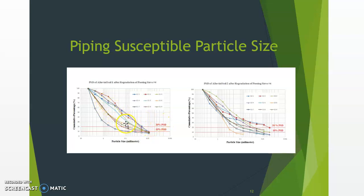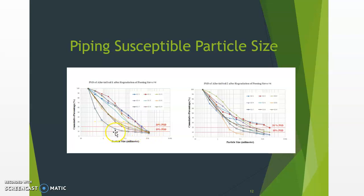Alluvial soil shows varieties of different grain size distributions. In this example, we took nine different locations in the alluvial soil — soil 1 (upper soil) and nine different grain size distributions from soil 2 (the below alluvial strata). To evaluate the erodible particle size, we draw a horizontal line matching the 10% and 20% particle size weight, and the corresponding particle size represents 20% of the mass of piping erodible soil.